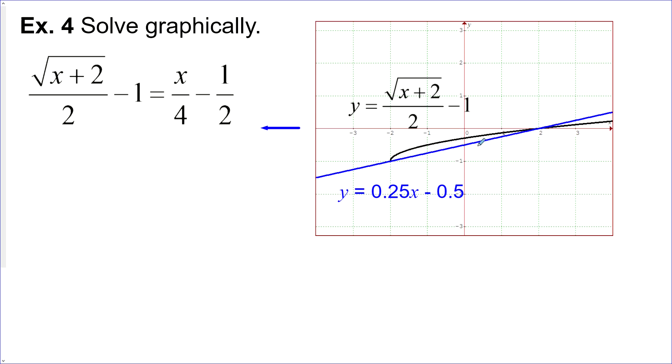Now on this nicer graphing software here, you can clearly see that there are two solutions, and that would be x is equal to negative 2 and plus 2. Don't write your answer as a coordinate like negative 2, negative 1, because remember there is no y in the original equation, so we don't want a y in our answer.